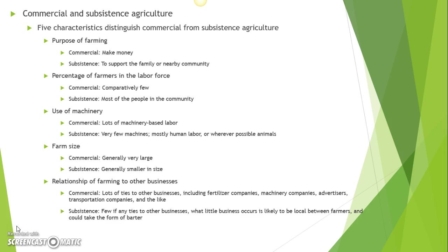The third characteristic that distinguishes commercial from subsistence agriculture is the use of machinery. On a commercial farm, there's lots of machinery and machine-based labor — everything from the combine to the harvester — machines that do the work that used to be done by human beings. On subsistence farms, you see very few machines, and the ones you do see are very low-tech, the kind of machines you'd learn about in a basic physics class. It's mostly human labor, or wherever possible, animal labor, since animals can pull more and work longer than humans.